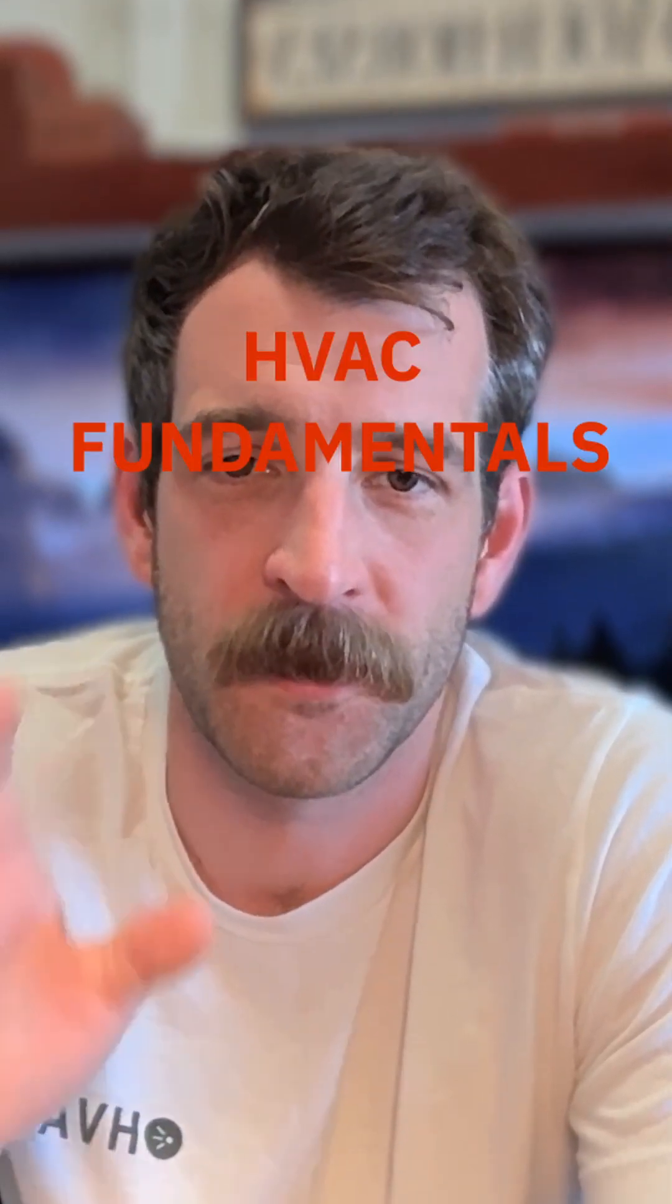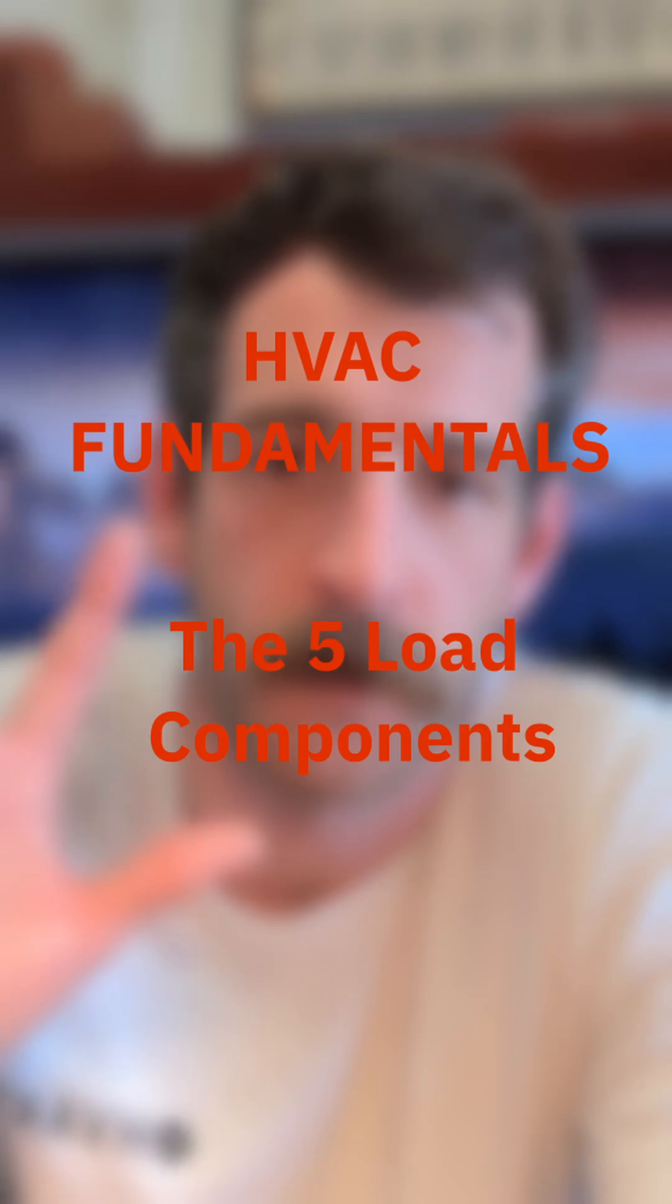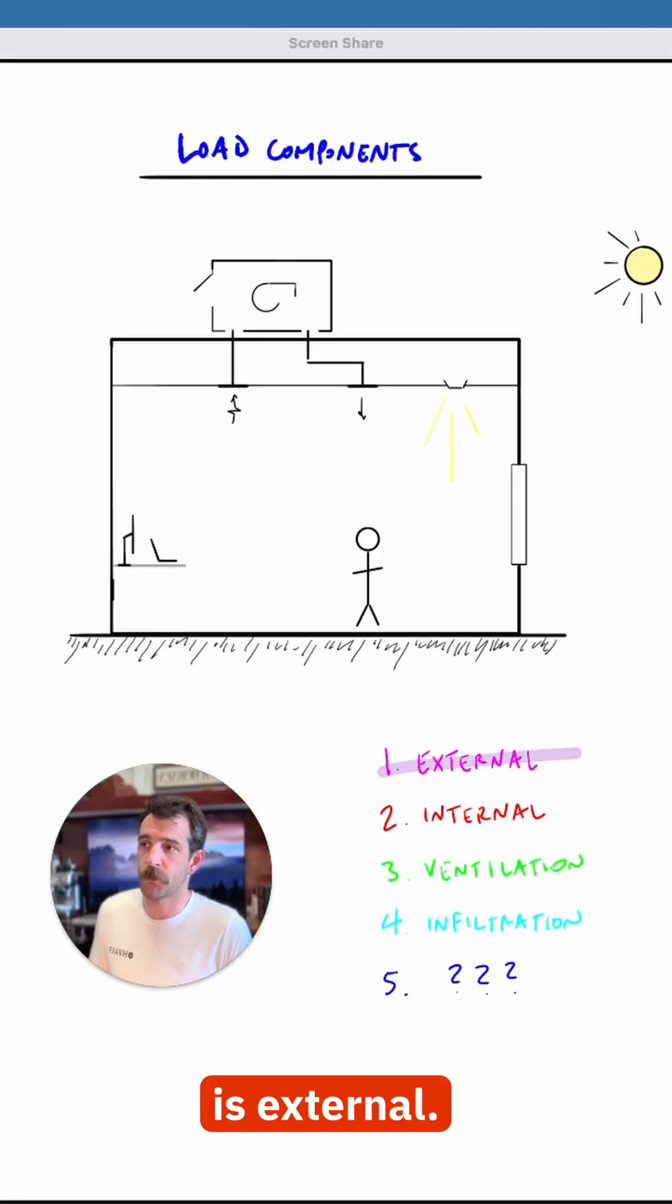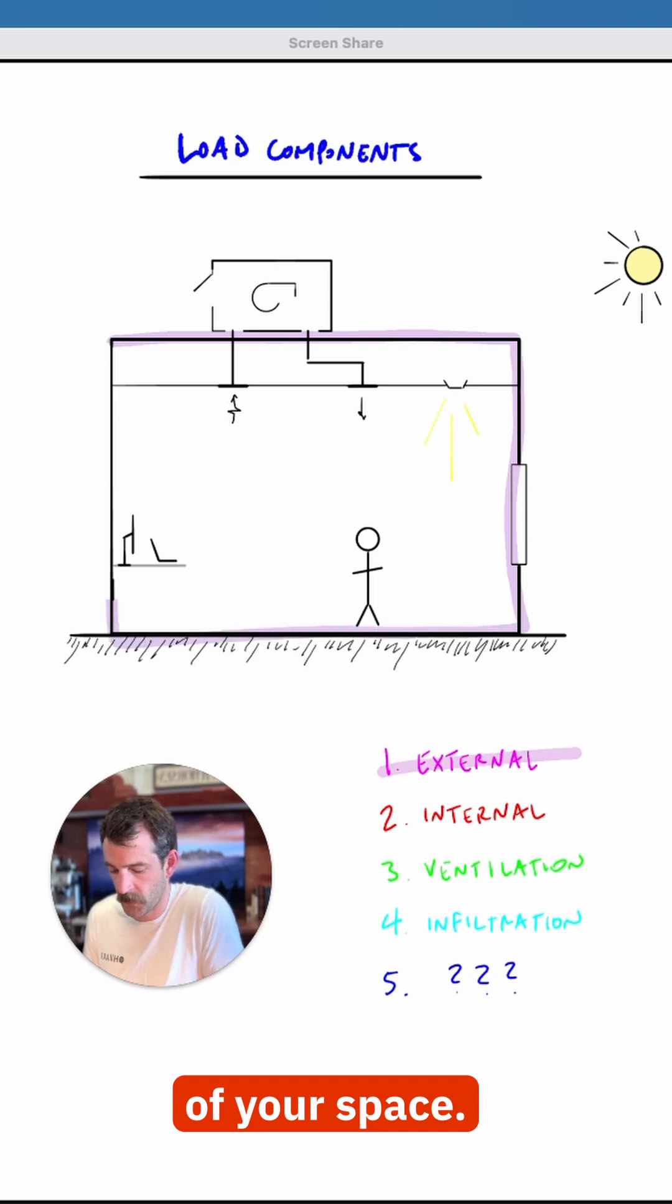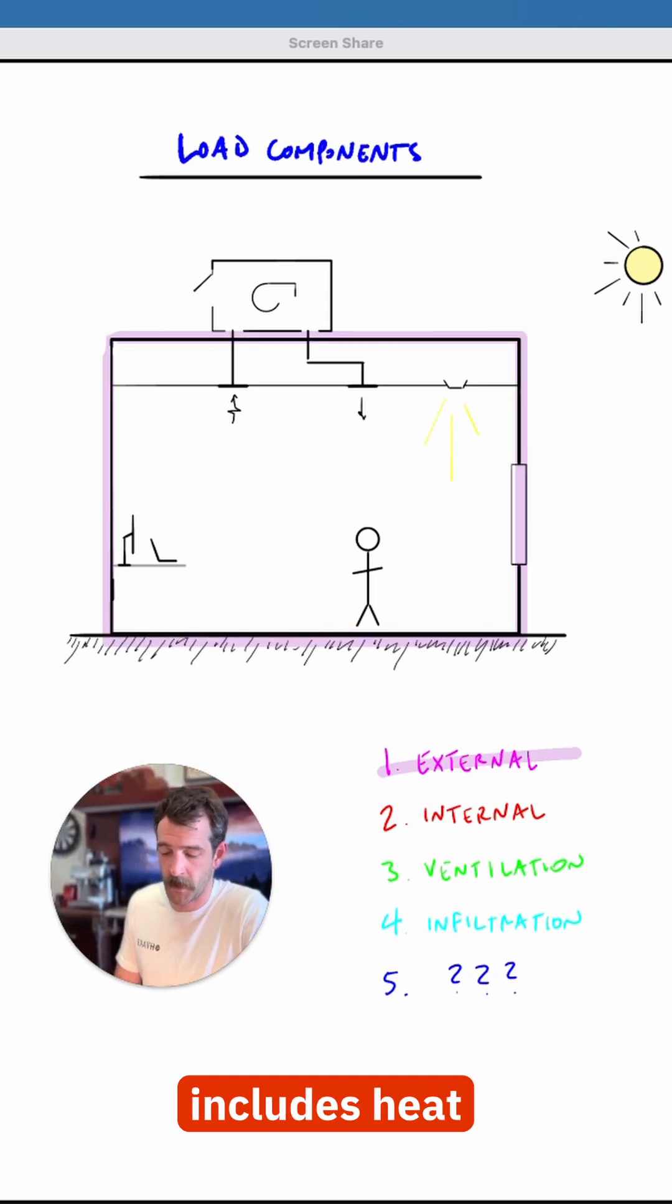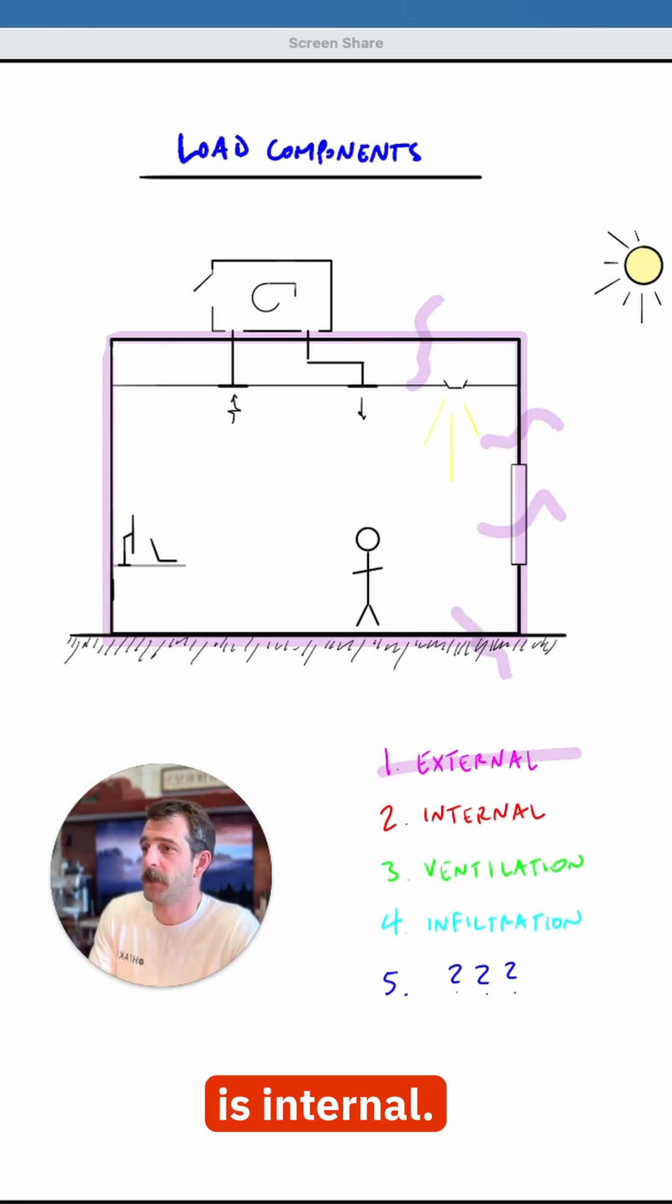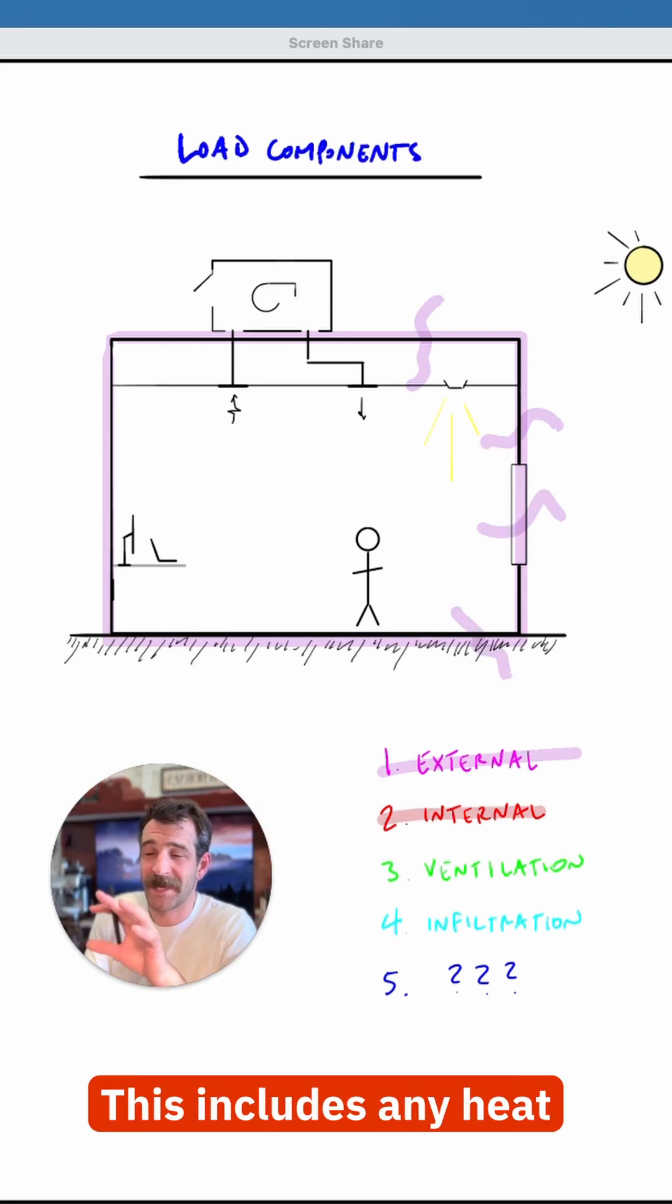Back to fundamentals. Here's a quick overview of the five load components. Number one is external. This is any heat transfer that comes in through the exterior of your space, so this is the envelope, and it includes heat transfer through the roof, through the walls, the windows, and the slab.